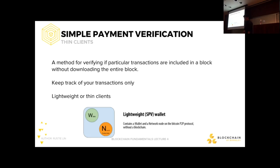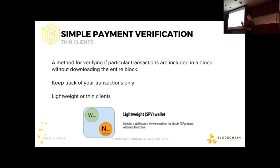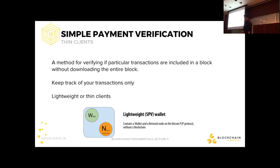Section two: wallet mechanics. Full nodes on the Bitcoin network have to download the entire blockchain, which is 140 gigabytes. Meanwhile, a Bitcoin smartphone app wallet is only a couple of megabytes. The reason for this is simple payment verification, or SPV. SPV allows you to check the validity of transactions — whether they were included in a block — by querying the Bitcoin network. If someone sends me a transaction, I'll query the network's full nodes, which tell me the Merkle root and Merkle branches necessary to construct the Merkle proof that the transaction was included in a previous block.